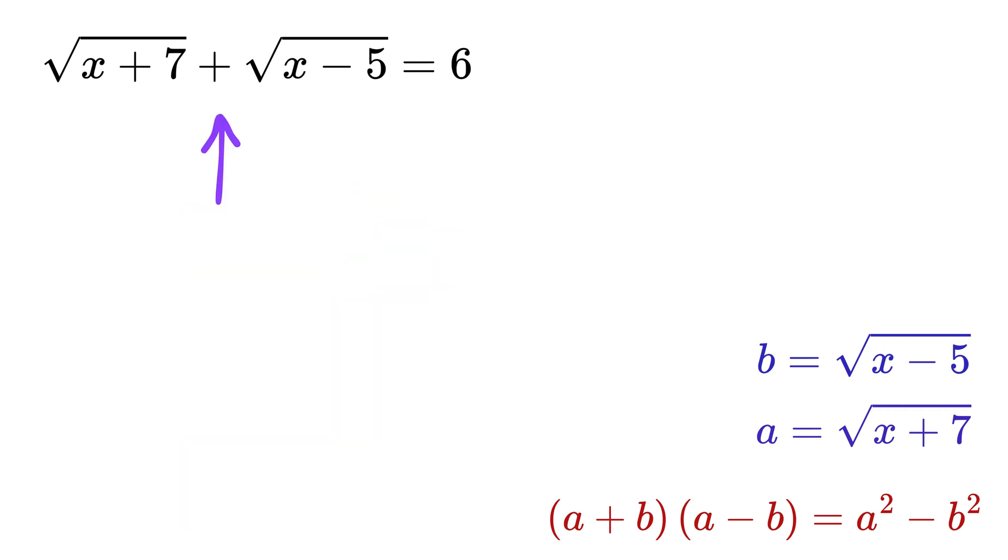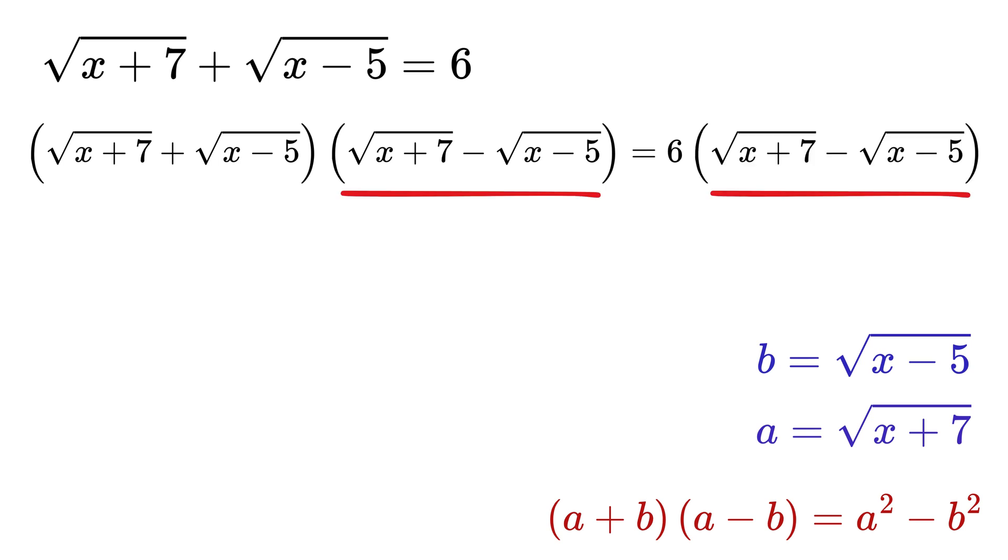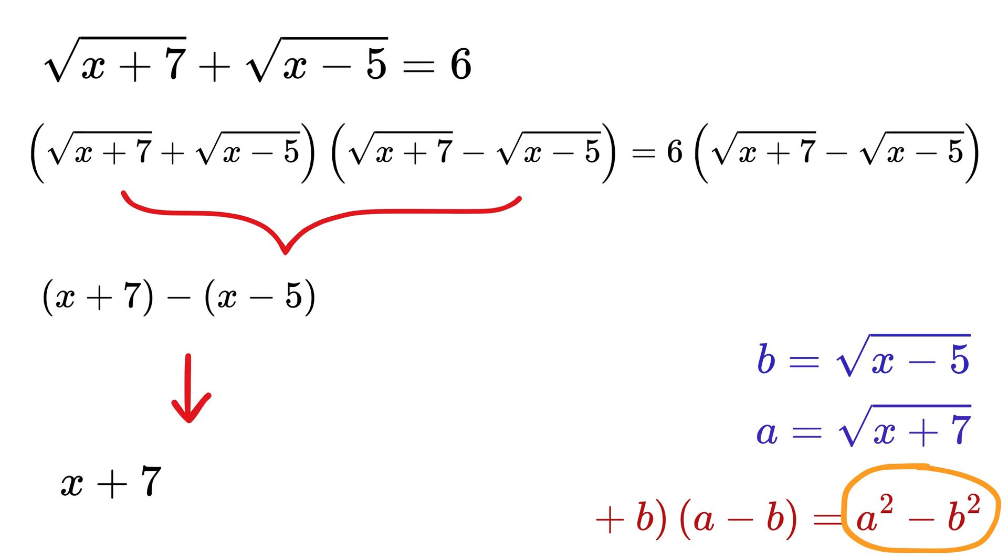Multiply both sides of this equation with (a - b) or √(x+7) - √(x-5). What do we get here? We get a² or (x+7) minus b² or (x-5), right? So this becomes x + 7 - x, and minus of minus 5 is plus 5.